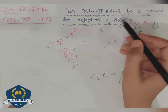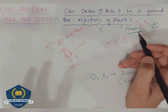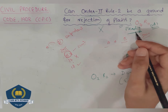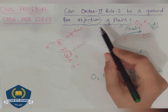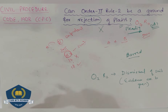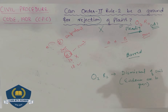Order 2 Rule 2 is just the ground of dismissal of suit, not rejection of plaint. For rejection of plaint, the bar must be apparent just from reading the pleading. But if further evidence is required — such as producing the plaint of the previous suit — then it is not rejection but dismissal of the suit.